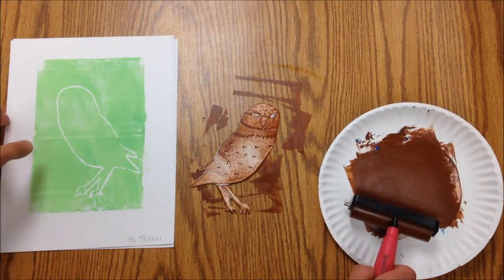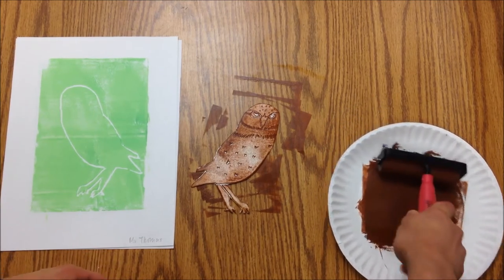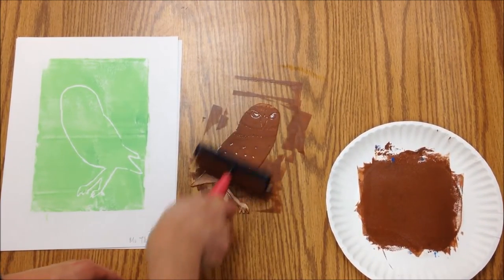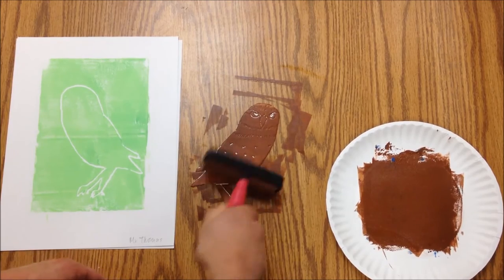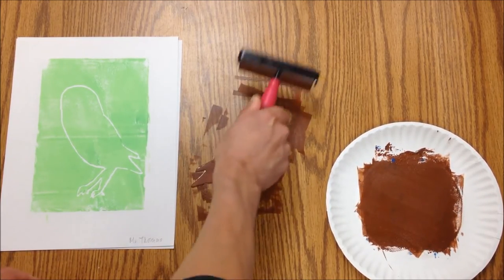I'm going to print out the second part of a reduction print. Get some brown ink on here. I've cut out the areas around the owl. Try and get inked consistently across that owl.